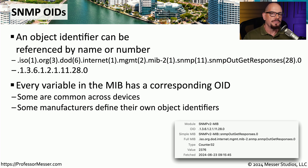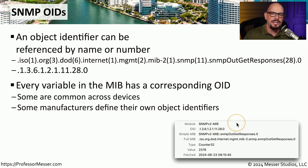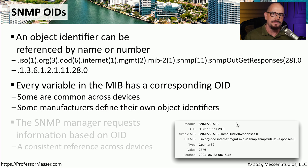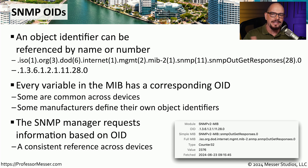Sometimes these object identifiers are very standardized across devices. One of these standards is the MIB2 standard, referred to as the SNMP v2-MIB — a set of OIDs that are identical across multiple devices. But sometimes a manufacturer has unique variables specific to that device, and in that case the manufacturer will create their own OID. You'll need to refer to the manufacturer's documentation to determine what OIDs are associated with what values. Sometimes the manufacturer will provide a file that documents the MIB, which you can add to your network management station, allowing you to retrieve those OIDs and know exactly what each OID is associated with.